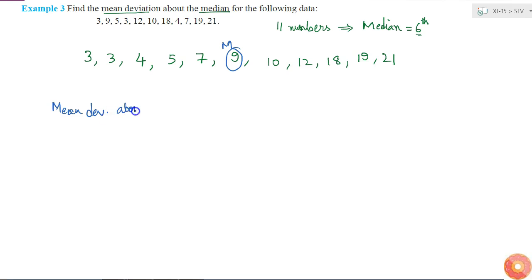Summation i from 1 to 11 of absolute value of xi minus M, divided by 11. This is the definition for mean deviation.